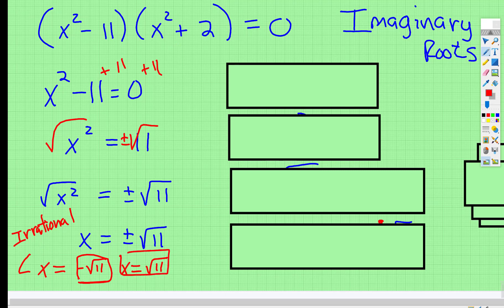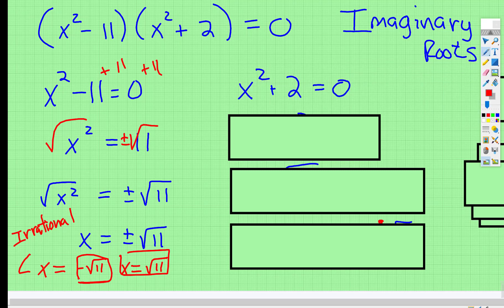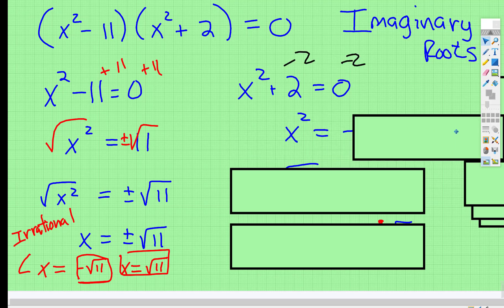Well, let's go ahead and solve this one now. So x squared plus 2, set that equal to 0. Then let me change that color. Subtract 2 from both sides. So x squared is equal to negative 2.